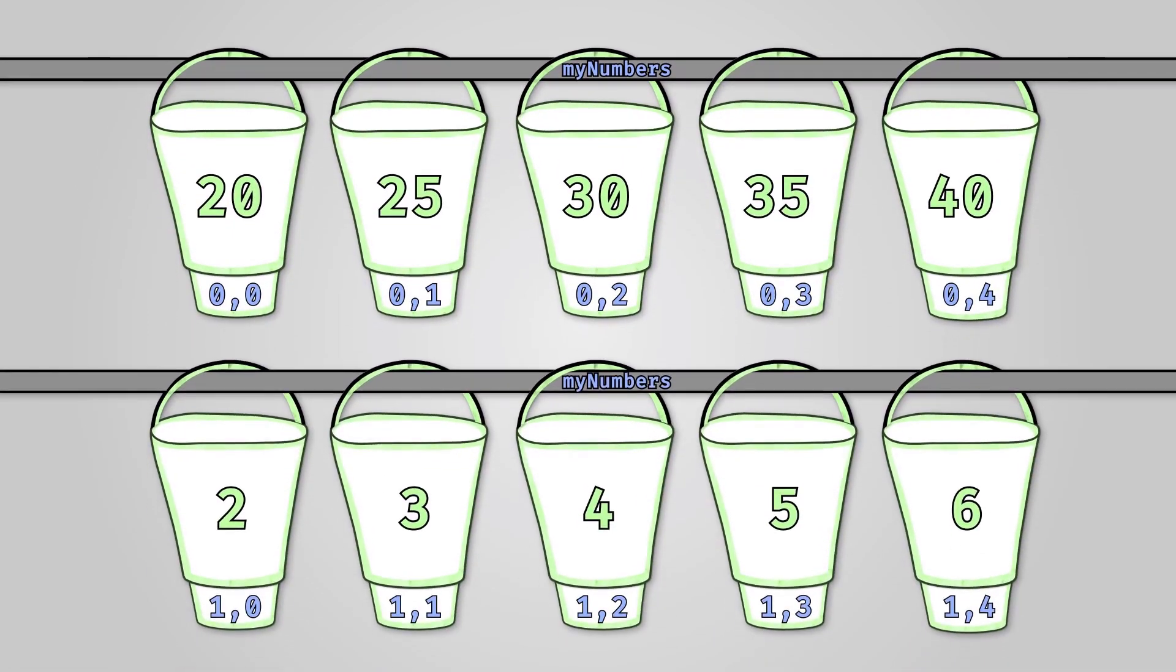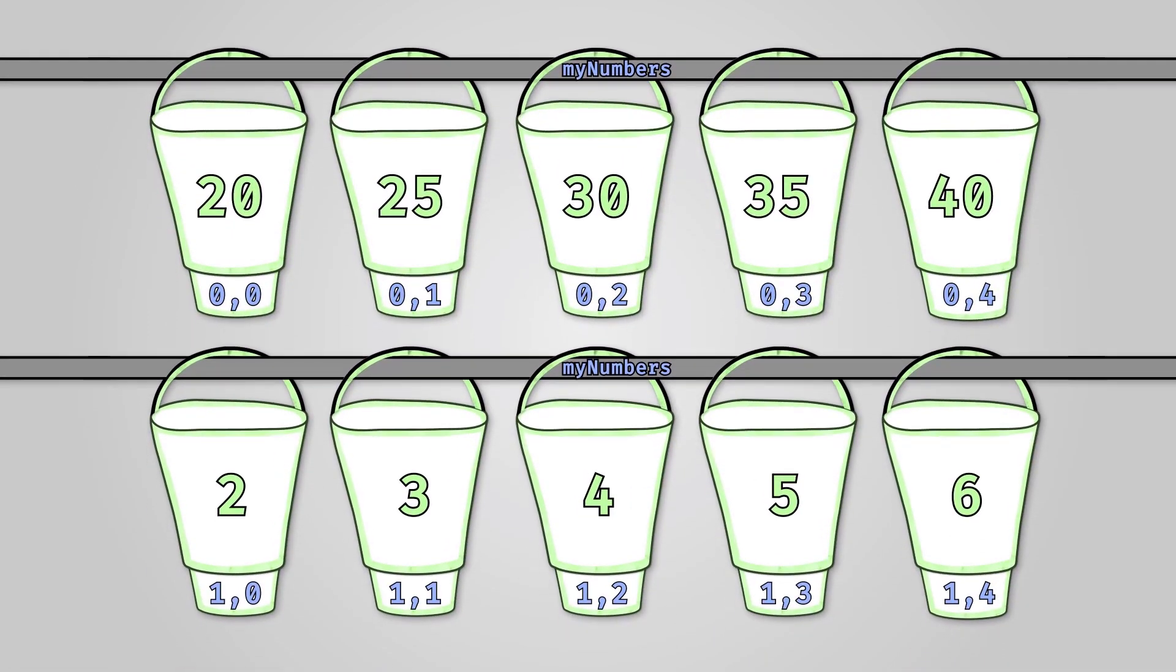Going back to our idea of buckets on a pole, a 2D array of five columns and two rows might look like this. Each bucket has two numbers on it now, showing its location in a row and column. Each bucket has a number in it, which is its data value.